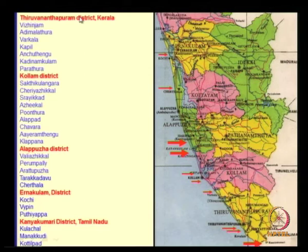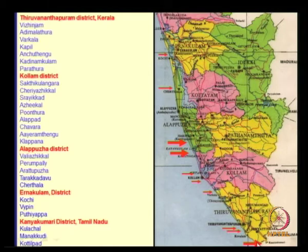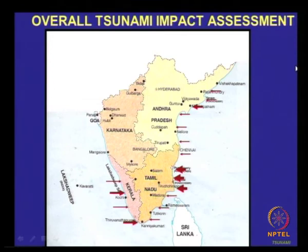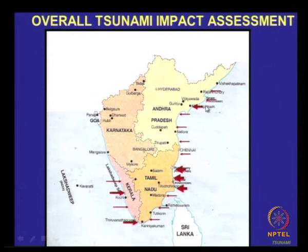As we have seen earlier, the east coast — because of the Sri Lankan island, diffraction took place and hit Kerala. The affected areas include Thiruvananthapuram district, Quilon, Alleppey, Ernakulam, and Kanyakumari district. The thick markings show the intensity with which it took place. The overall tsunami impact: here this area was very badly affected, followed by these two areas, and Machilipatnam was also affected.